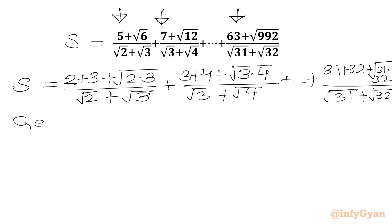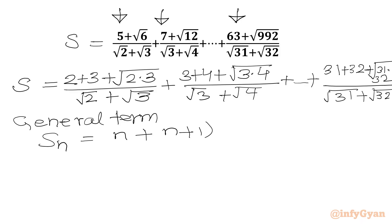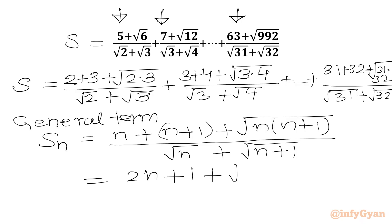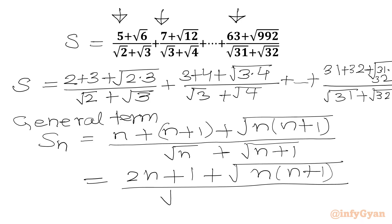Now we have to write our general term. The general term of the sequence, which I will call Sn, can be written as: numerator is n plus (n plus 1) plus square root of n times (n plus 1), which simplifies to 2n plus 1 plus square root of n(n+1). In the denominator we write square root n plus square root (n plus 1).